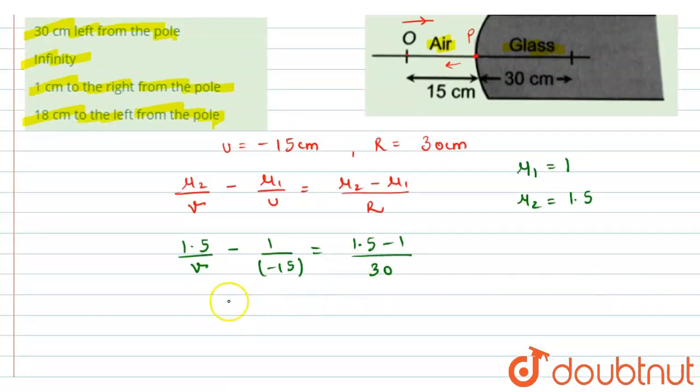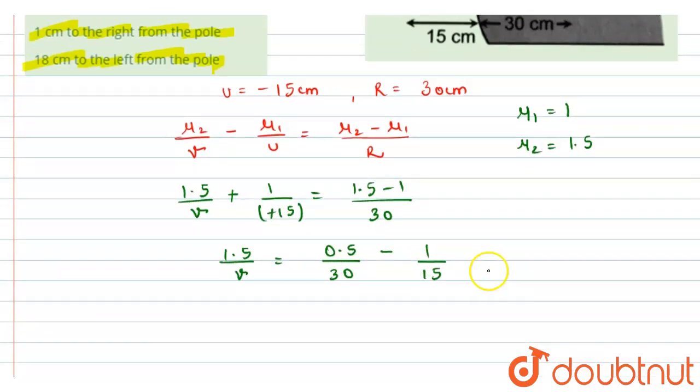So we will get 1.5 divided by v will be equal to 0.5 by 30 and this minus minus will make it positive and on coming here it will become negative. On taking LCM we will get here 30 and here we will get 0.5 minus 2. So we will get 1.5 divided by v equals to minus 1.5 divided by 30.